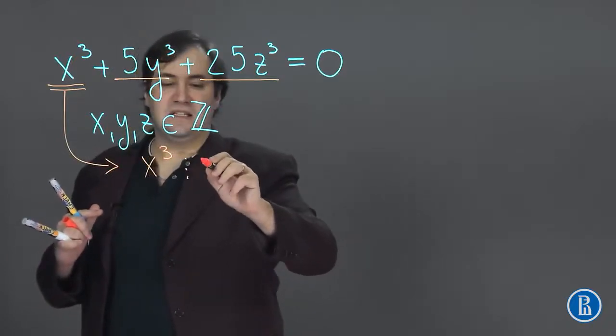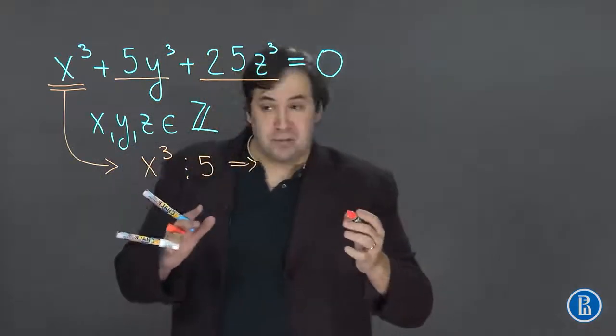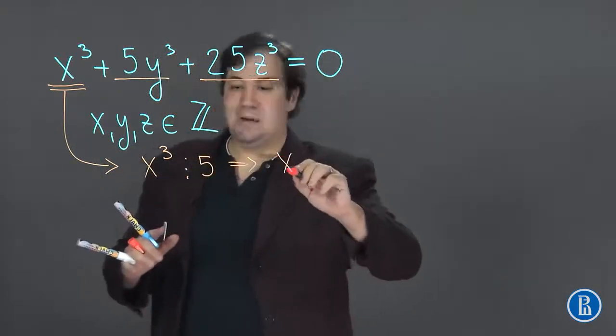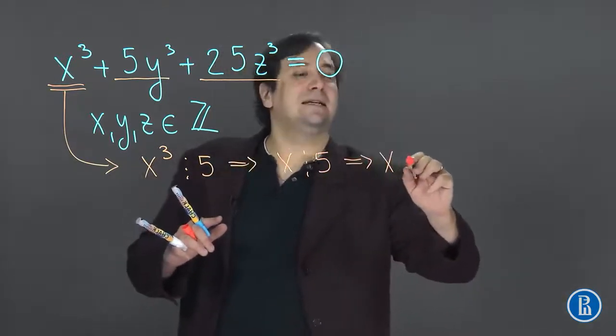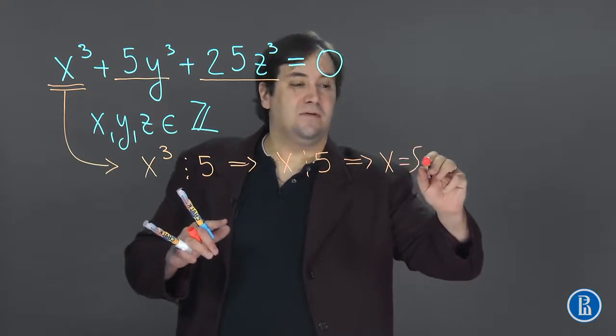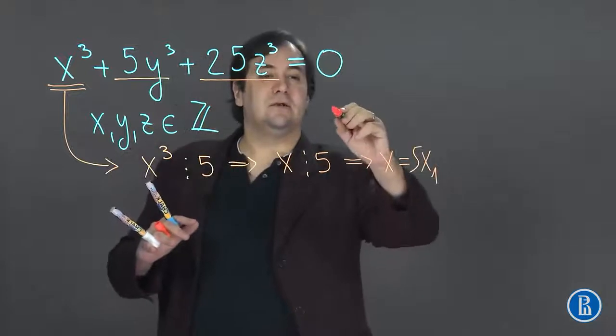Since x³ is divisible by 5 and 5 is a prime number, then x must also be divisible by 5. So we can say that x is equal to 5 times x₁, where x₁ is also an integer.